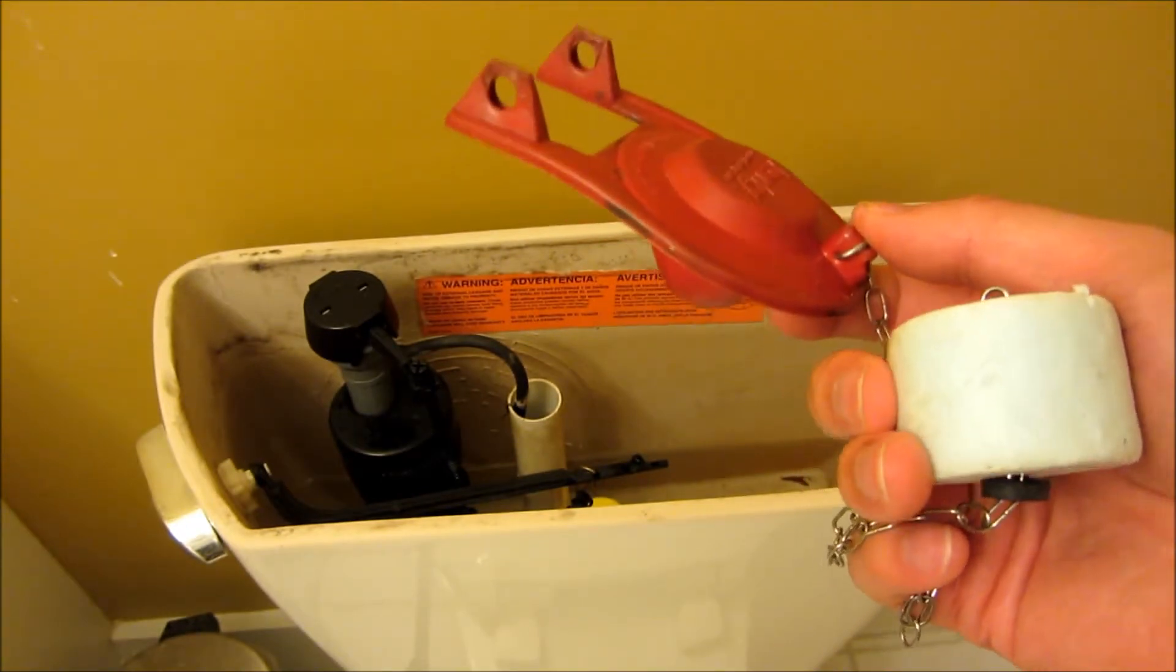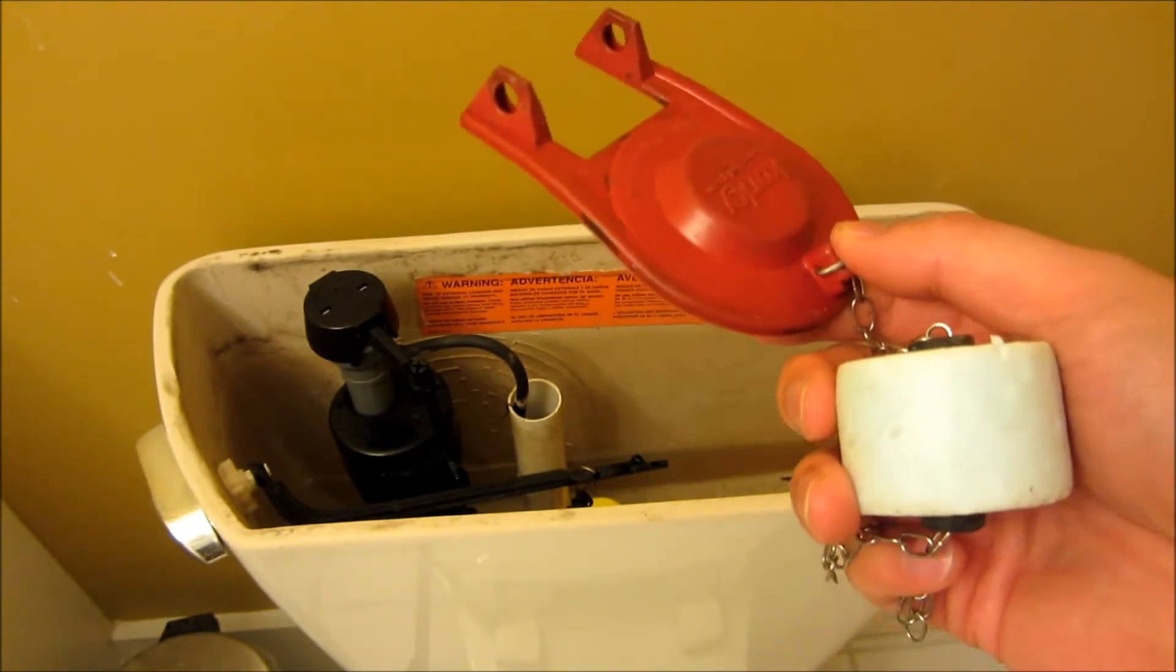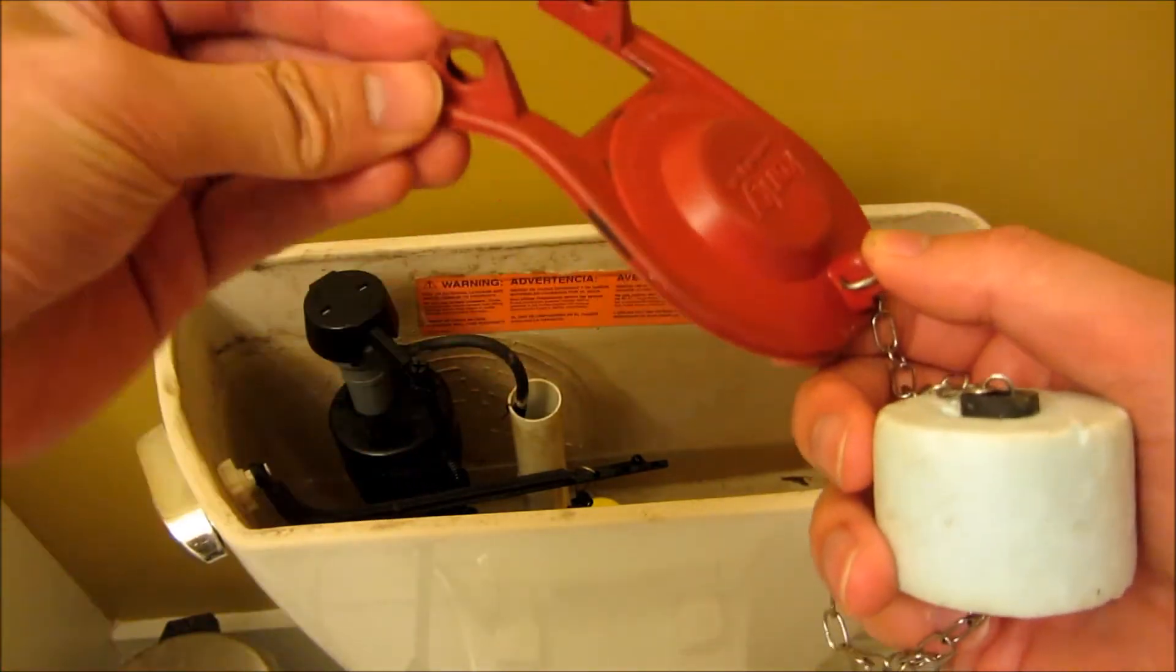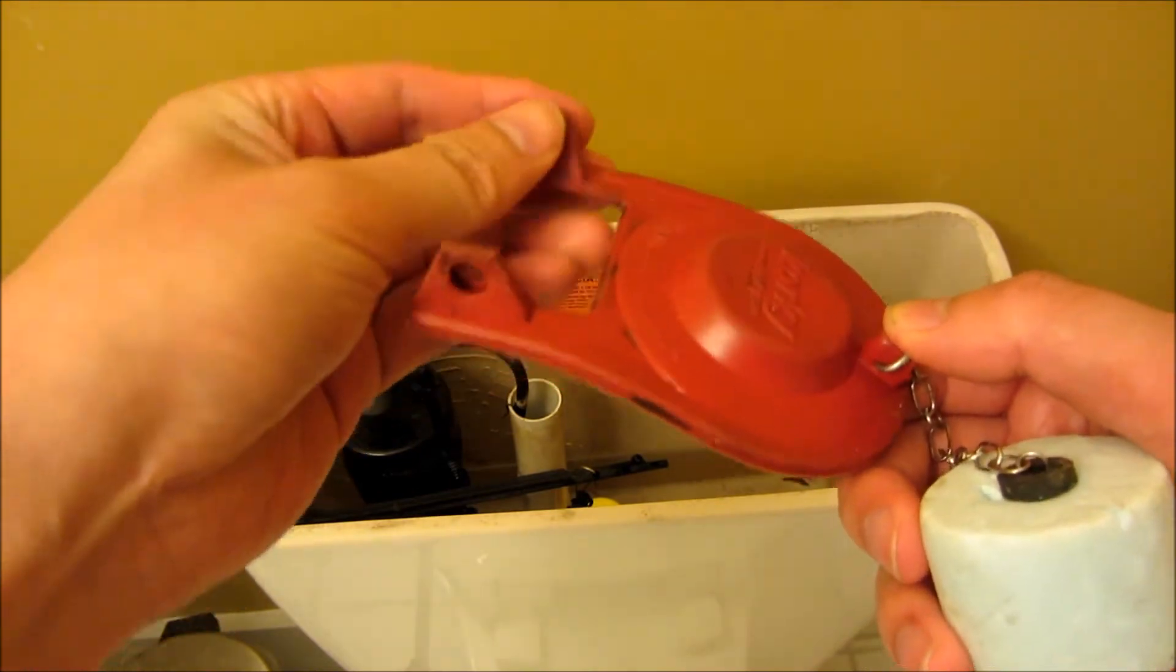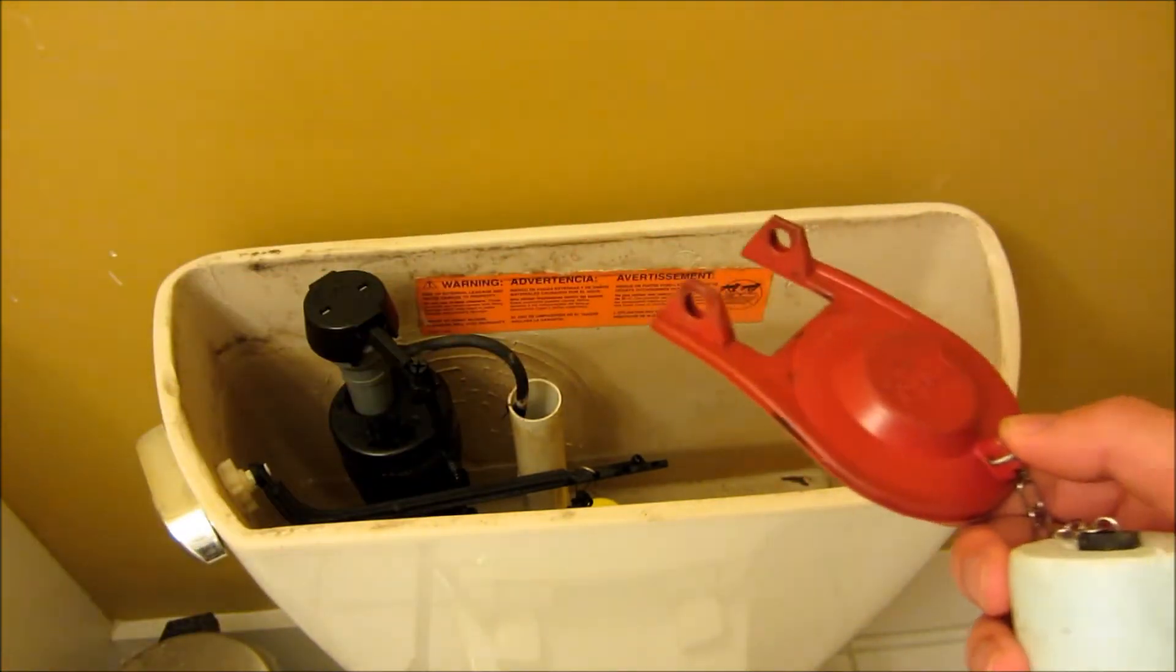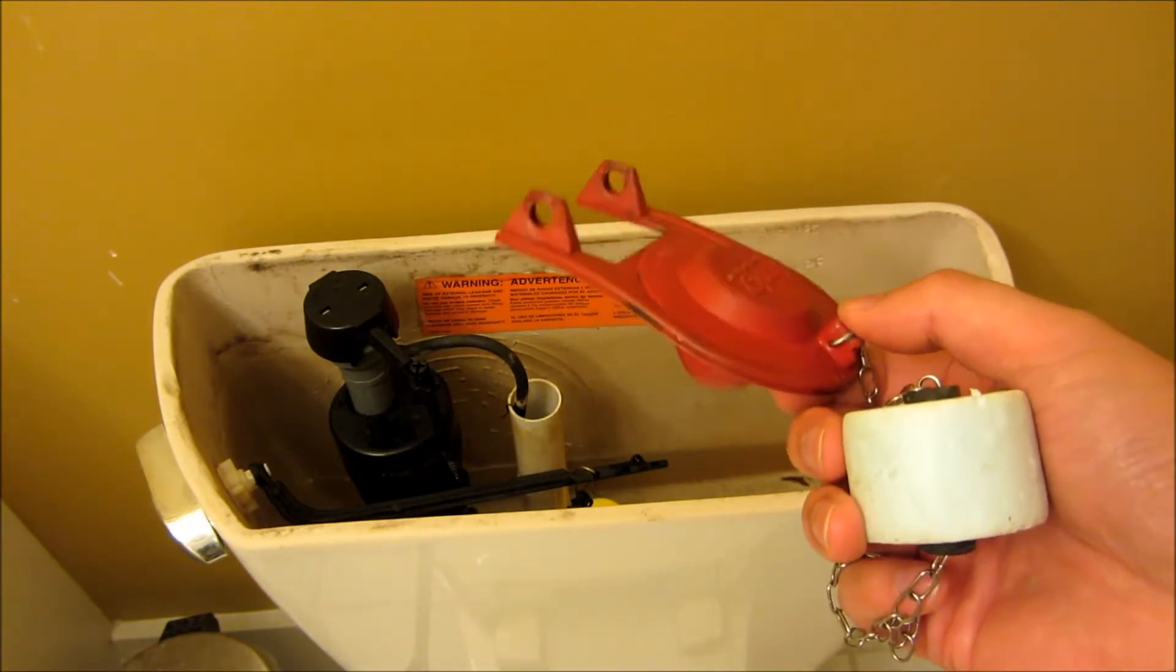And also, the instructions don't actually explain this. I didn't see any other video that explains this. They just explain basically the obvious, which is hooking these rubber holes into the toilet bowl.